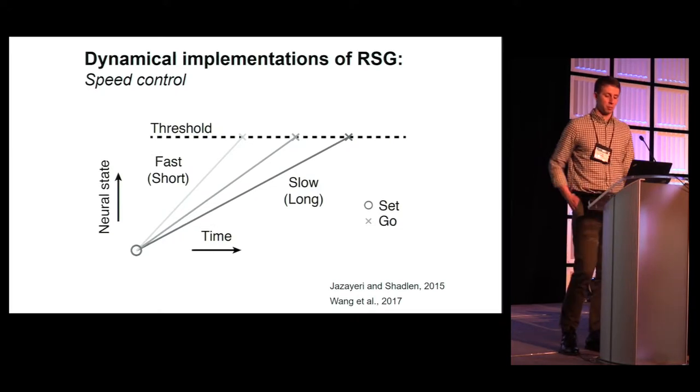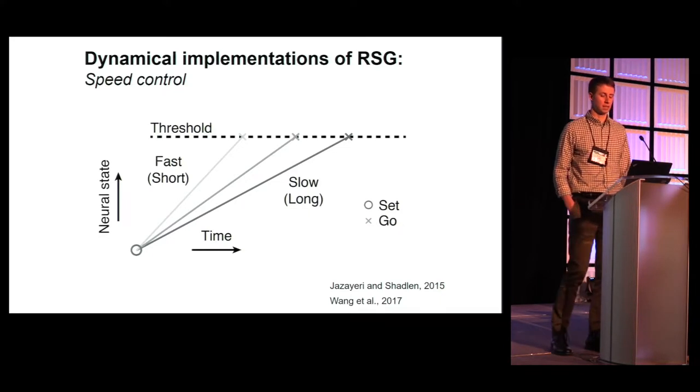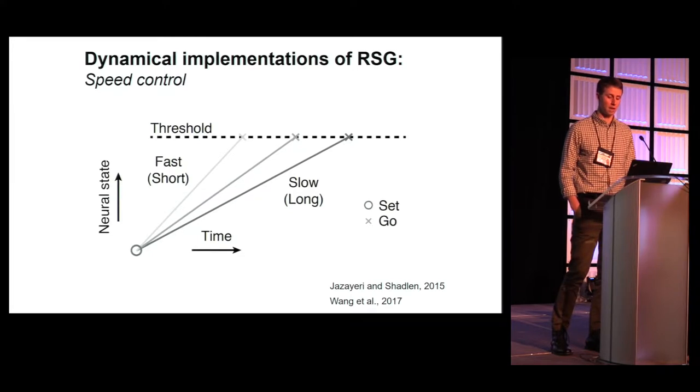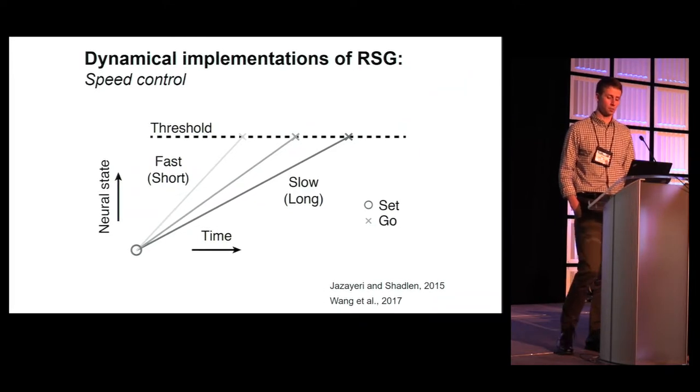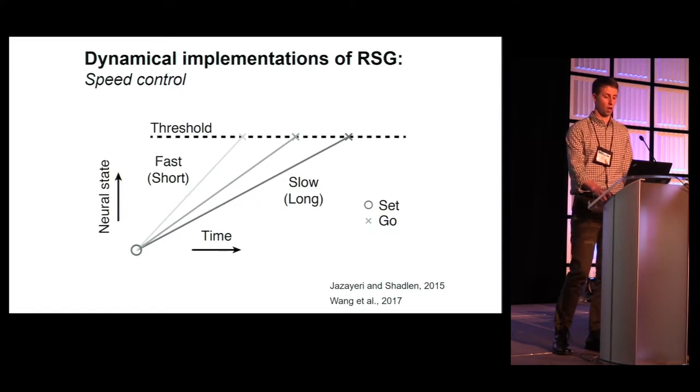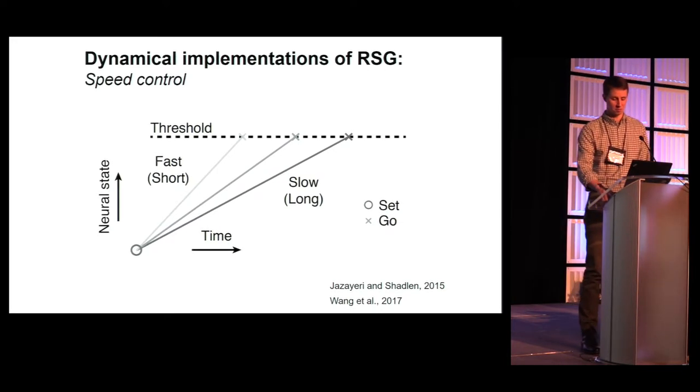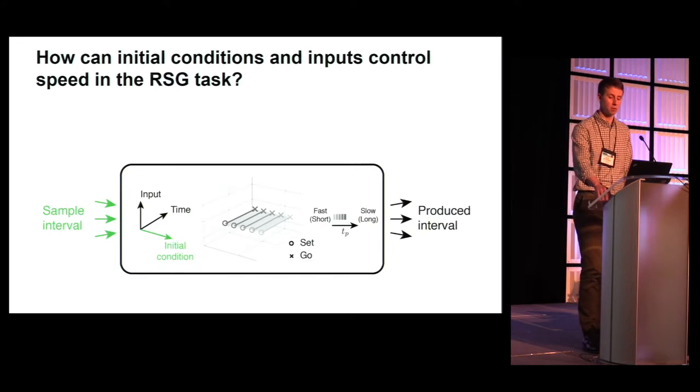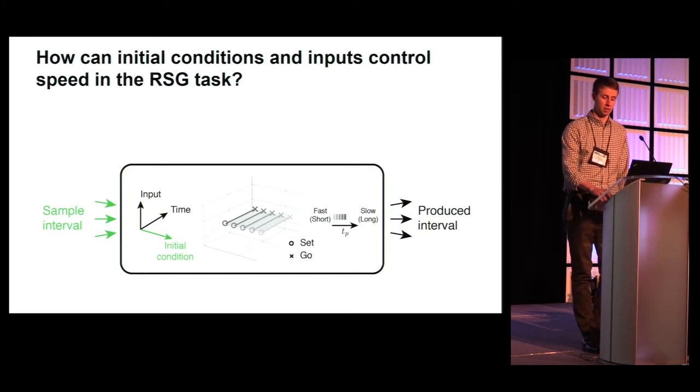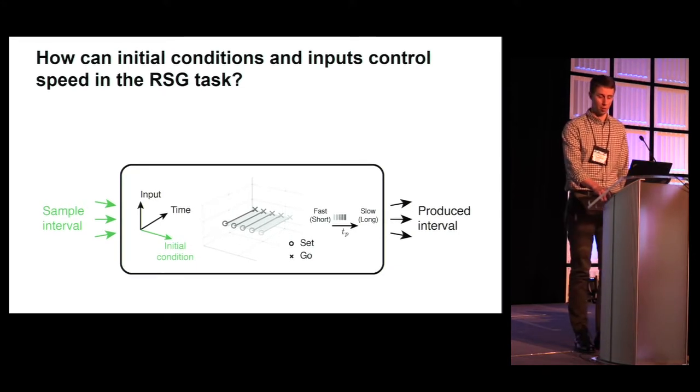How might this task be accomplished by the brain? Previous work in our lab has pointed to a speed control mechanism in which neural activity follows a set path through a neural state space at a rate necessary to reach an action-initiating state at the appropriate time. To produce a short interval, activity evolves from set to go quickly. Long produced intervals would require activity to evolve more slowly. The question then becomes, how is speed control achieved in this task? To answer this question, I'm going to focus on the neural dynamics during the set-go epoch.